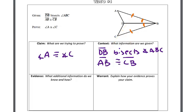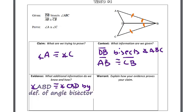The next question asks what additional information do we know and how. We want to provide our evidence. Since DB bisects angle ABC, we know that angle ABD is congruent to angle CBD by the definition of an angle bisector.